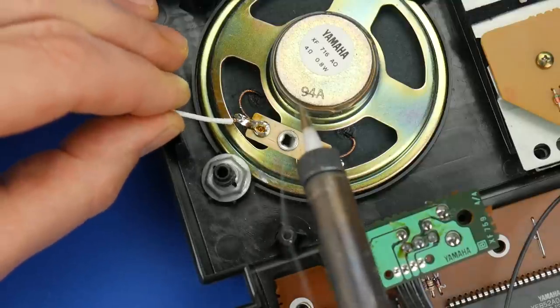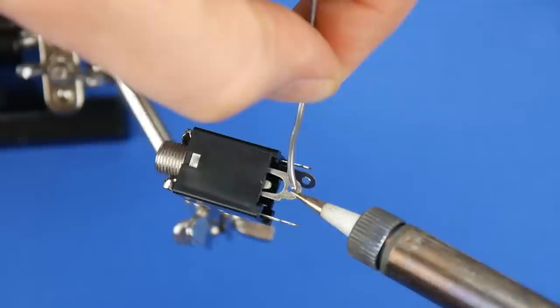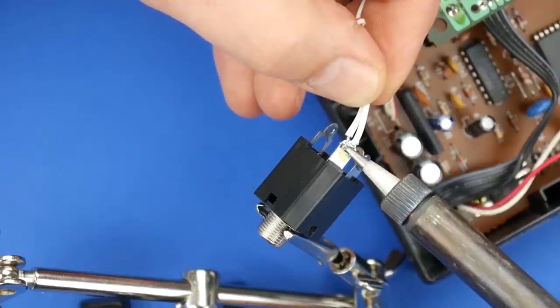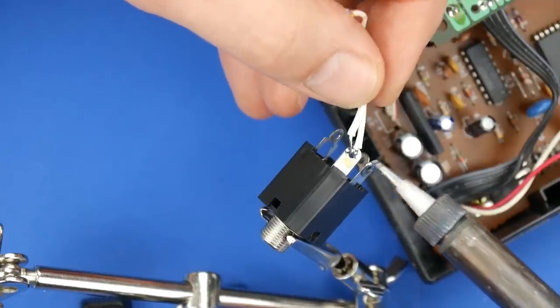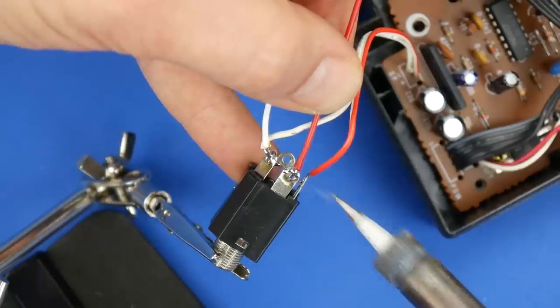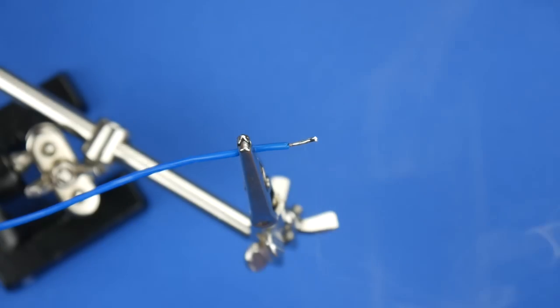First I solder two new cables to the speaker. Put some solder to the contacts. That makes it a bit easier. Now I attach the two ground wires to the sleeve contact. The amp signal to the tip contact. And the speaker cable. Now comes the final step. I connect the blue cable to the ring contact.